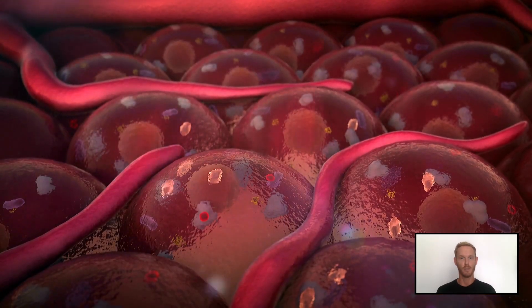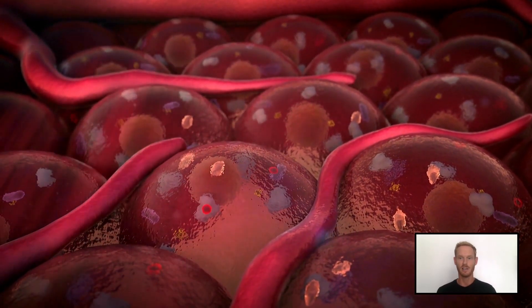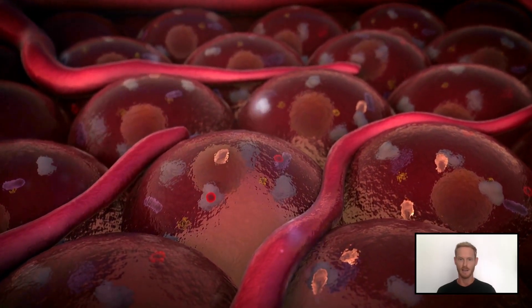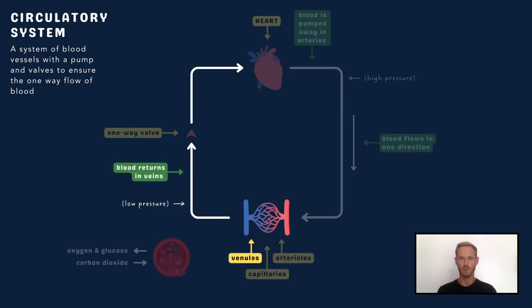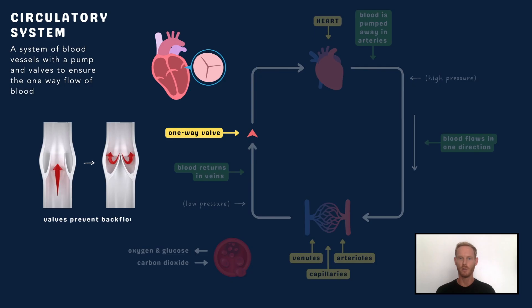Here, pressure falls and the blood slows down to facilitate the exchange of substances between blood and cells. Capillaries merge into venules, and the venules lead into veins which carry the blood back to the heart, where the process begins again. To ensure that blood only flows in one direction through the system, valves are present in the veins and within the heart itself.